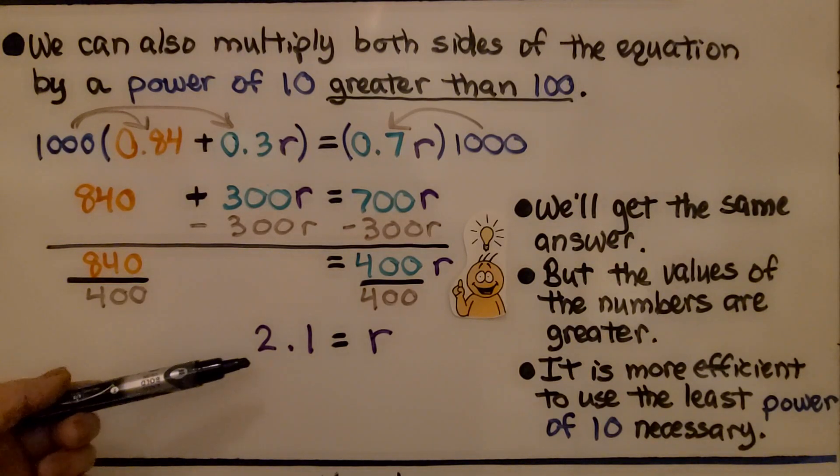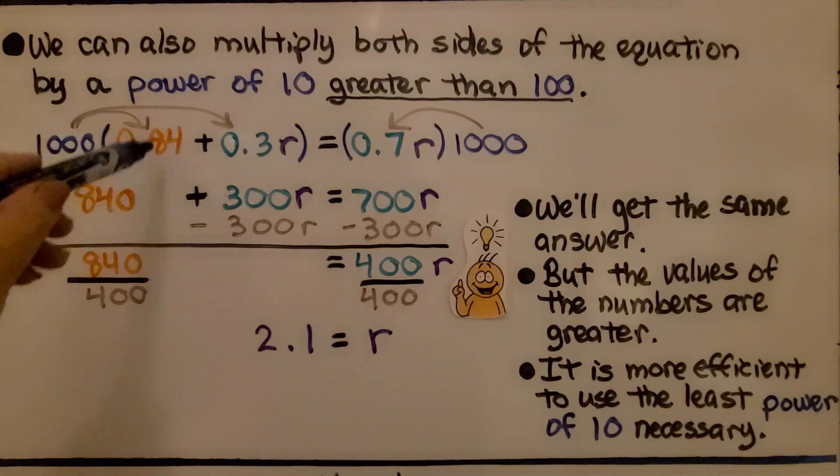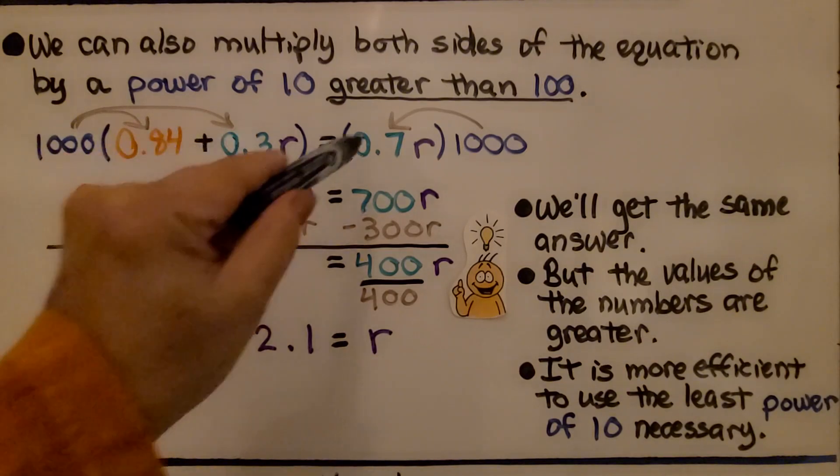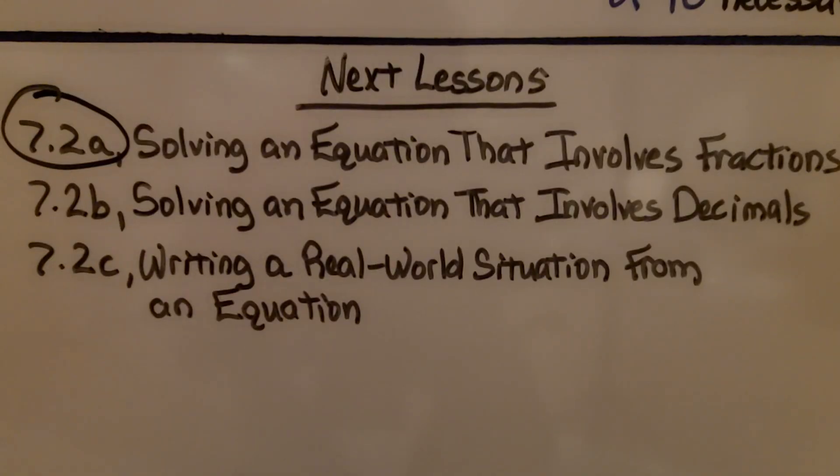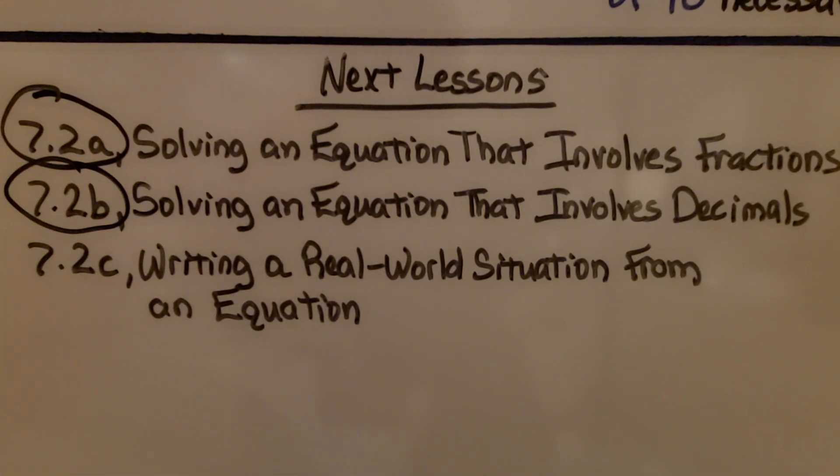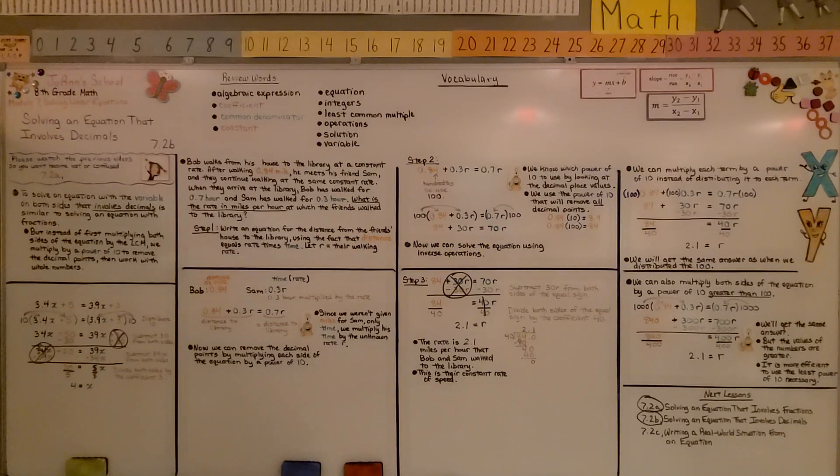It is more efficient to use the least power of 10 necessary. We'll deal with smaller values if we just multiply by 100, or the power of 10 that is needed to make each one, bare minimum, a whole number. We're finished with 7.2b. We're moving on to the last part, C, writing a real-world situation from an equation. Keep trying your best, I'm proud of you. Let's get to the last part of the lesson, 7.2c, and you have a great day. Bye.